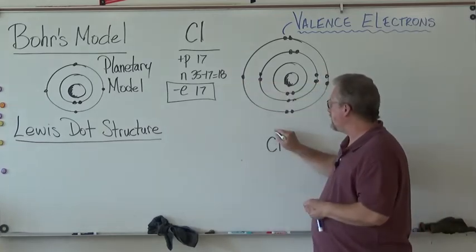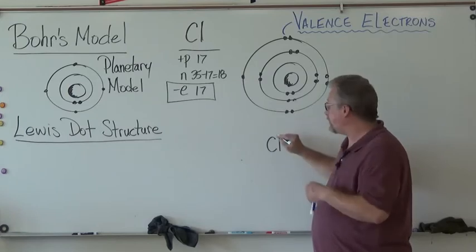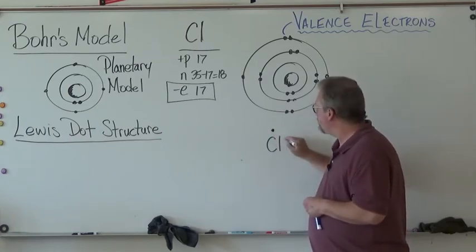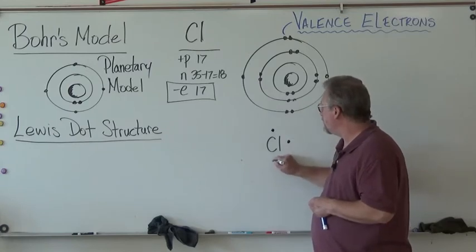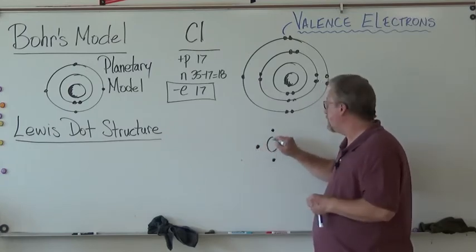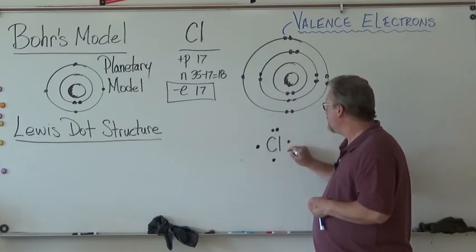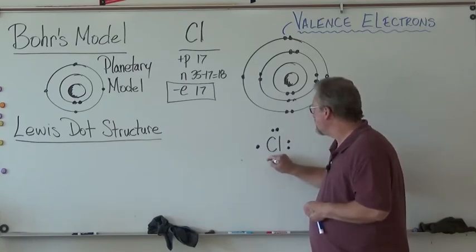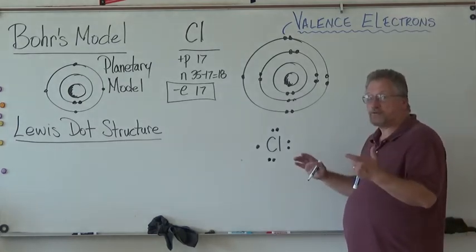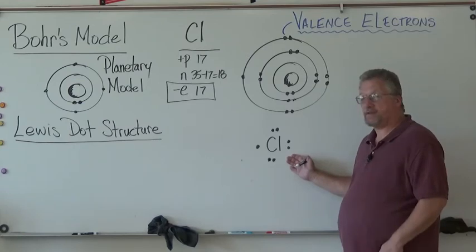He goes, look, I got seven electrons, and we're going to do the exact same way we did with the Bohr's model here, similar. We're not going to draw a ring. We're going to go one, two, three, four. Now start pairing them up. Five, six, seven. So the Lewis dot structure for chlorine looks like this.